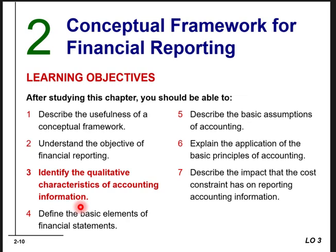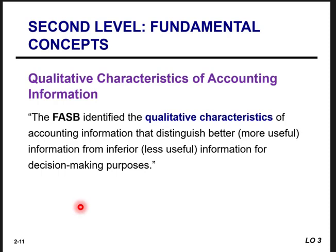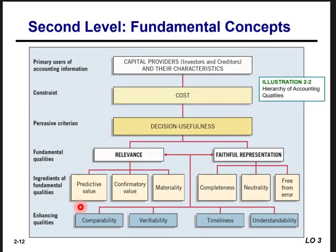Learning objective three: identify the qualitative characteristics of accounting information. The FASB identified the qualitative characteristics that distinguish better, more useful information from inferior or less useful information for decision-making purposes. This is the second level. The illustration shows primary users of accounting information, the cost constraint, the pervasive criterion of decision usefulness, and the fundamental qualities — relevance and faithful representation — along with the enhancing qualities.